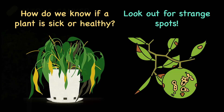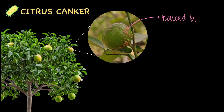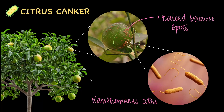Now some of the diseases that affect plants include citrus canker. Citrus fruits like lime often show raised brown spots, as you can see in the image. This disease is caused by a bacteria called Xanthomonas citri. When this particular bacteria infects citrus plants, it affects the leaves, stems and fruits, thereby reducing the fruit quality. And ultimately, since citrus plants are grown for their fruits, this also affects the farmers who are rearing them.